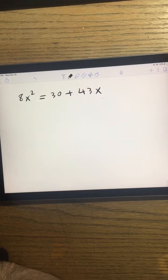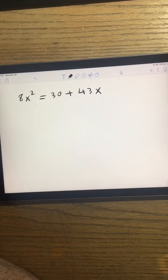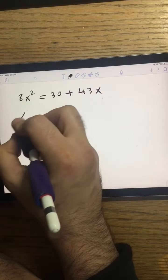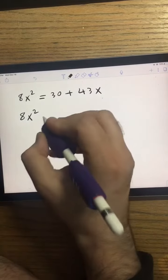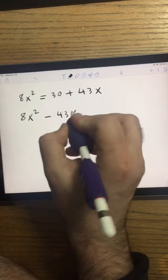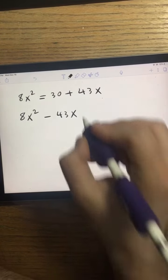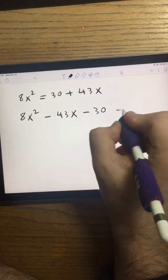So first, I'm going to move everything to the left side equals 0. So I got 8x² - 43x - 30 = 0.